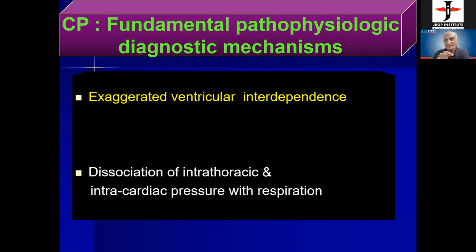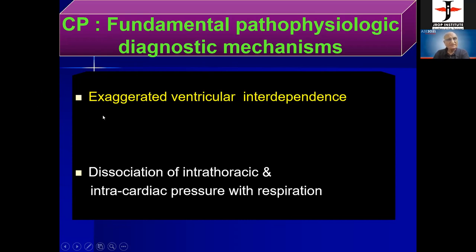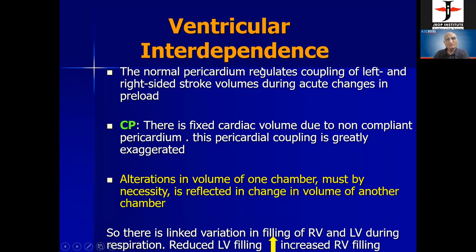We must demonstrate two fundamental pathological mechanisms to diagnose constrictive pericarditis, demonstrated by M-mode, 2D, Doppler, or MRI. The first is exaggerated ventricular interdependence. In a normal pericardium, stroke volume is regulated in both chambers — if volume increases in one, it can increase in the other. But in constrictive pericarditis, there is a fixed cardiac volume because of the non-compliant pericardium.